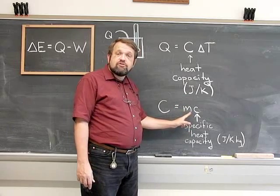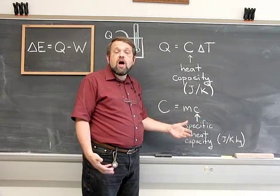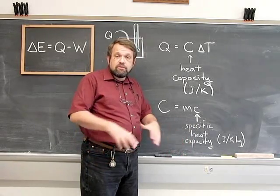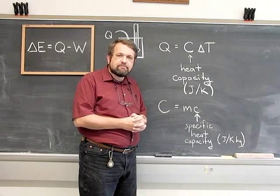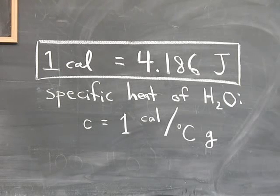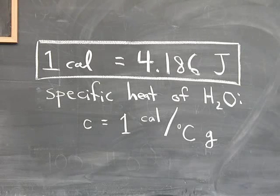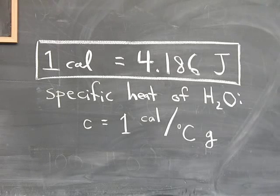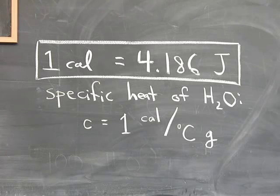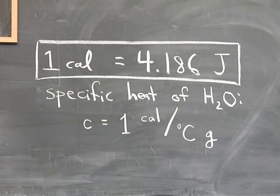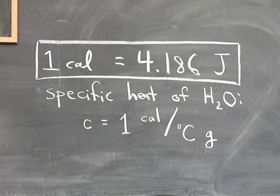The specific heat is generally a property of the substance the system is made of. When talking about specific heat, it's sometimes useful to use the calorie, an old-fashioned unit of heat energy. One calorie is a little over four joules. The specific heat of liquid water is one calorie per degree Celsius per gram. Since a degree Celsius equals a Kelvin, this means a single gram of water has a heat capacity of about four joules per Kelvin.